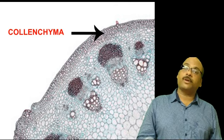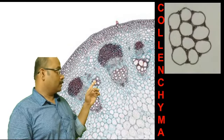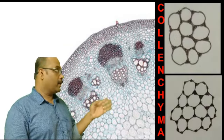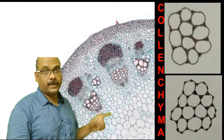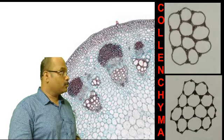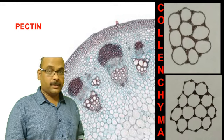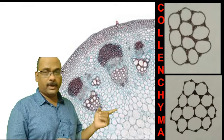We will see how this collenchyma is drawn. This way. They can be circular, oval, or polygonal. And you can see, they have thickening in the corners of their cell wall. This is due to the deposition of a material called pectin. So we can move to their points. First one is about the shape itself. Same as parenchyma, circular, oval, or polygonal.